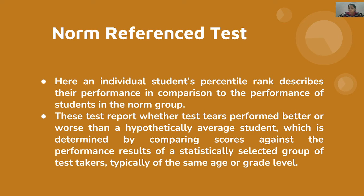These tests report whether test takers performed better or worse than the hypothetically average student, determined by comparing scores against a statistically selected norm group, typically of the same age or grade level. In competitive examinations, the cut-off depends on how students perform — if the paper is difficult, cut-off goes down; if easy, cut-off goes up.